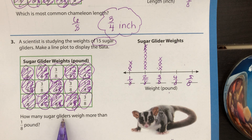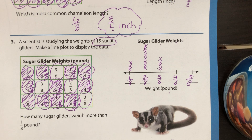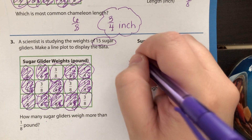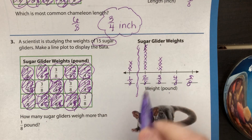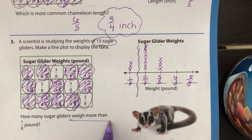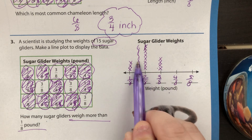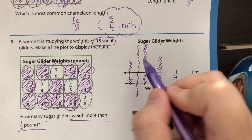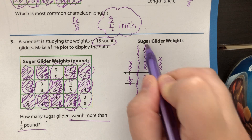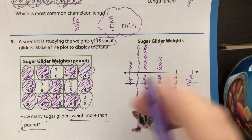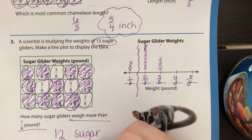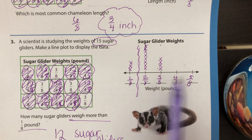Now to answer the question: how many sugar gliders weigh more than one eighth of a pound? This is not a most common question — this is different. So right here in the chart, all of these were one eighth — I don't need these. They said that they weigh more than one eighth. All of the sugar gliders on this side of the number line weigh more than one eighth. So now I have to count those X's: one through twelve — twelve sugar gliders weigh more than one eighth of a pound.